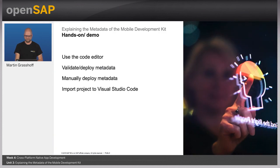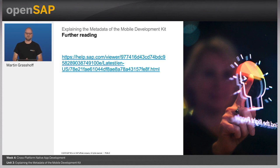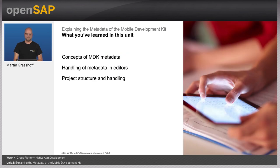In this unit, we have discussed the metadata and its concepts, how metadata is handled in the various editors, the project structure, and the handling of projects. This concludes Unit 3, explaining the metadata of the Mobile Development Kit. The upcoming unit is building rules for Mobile Development Kit apps.